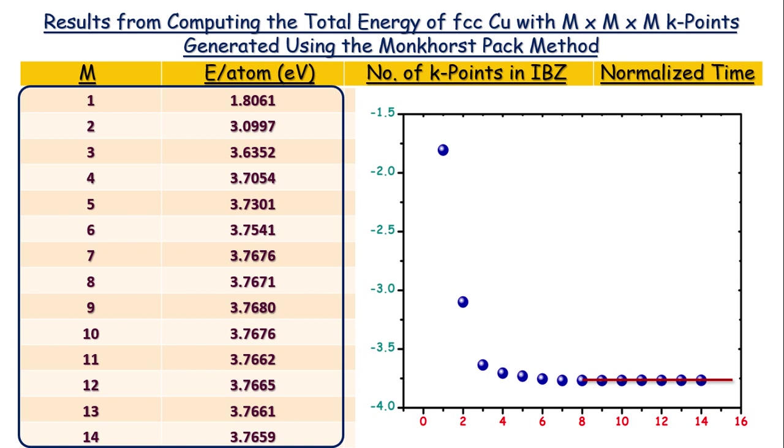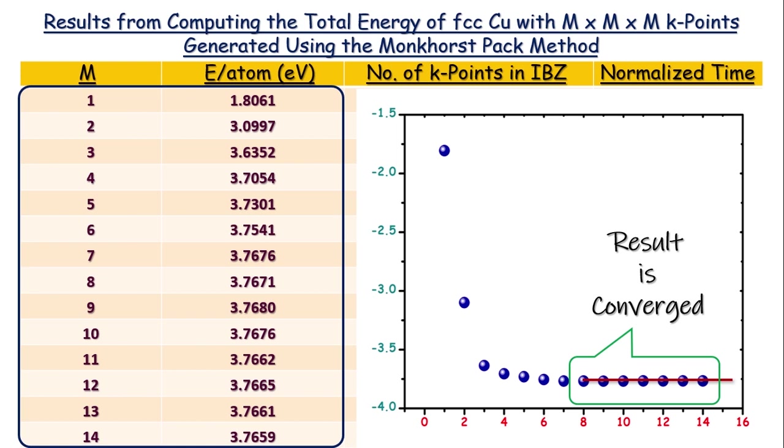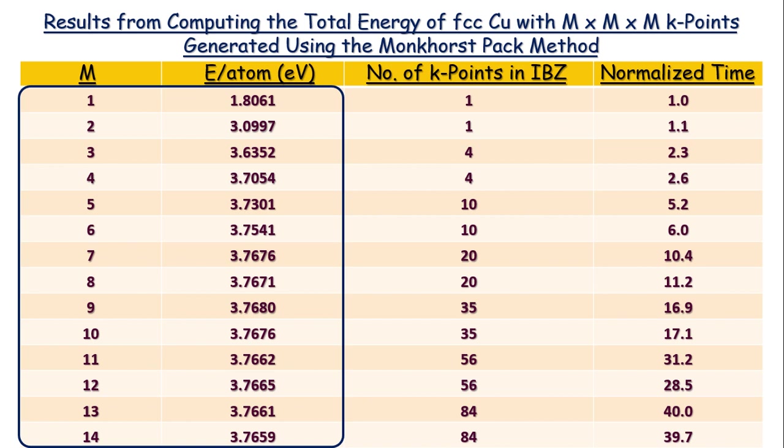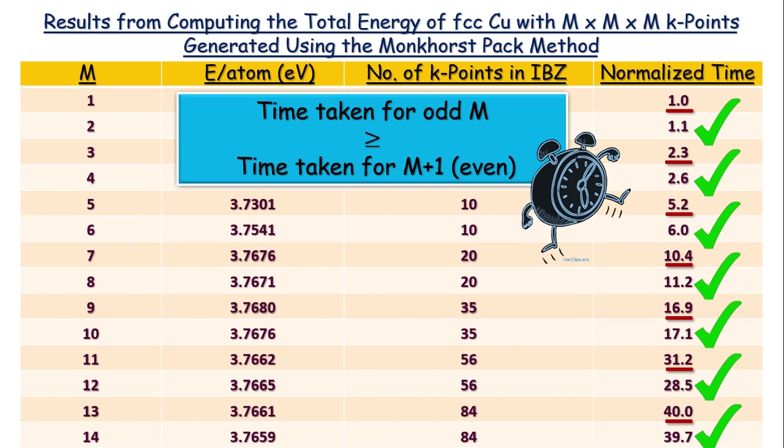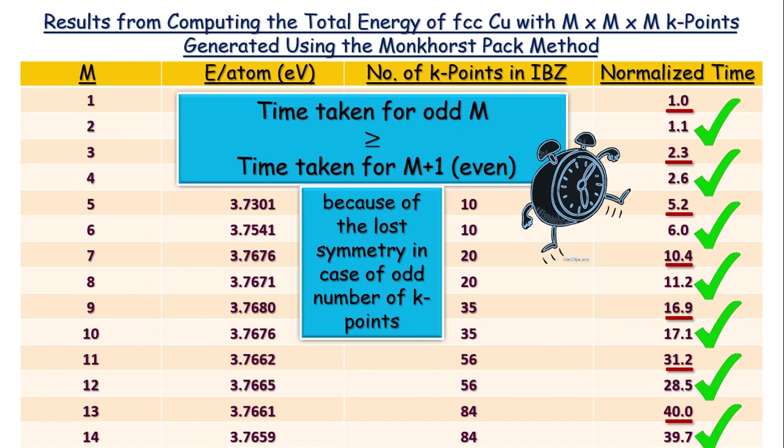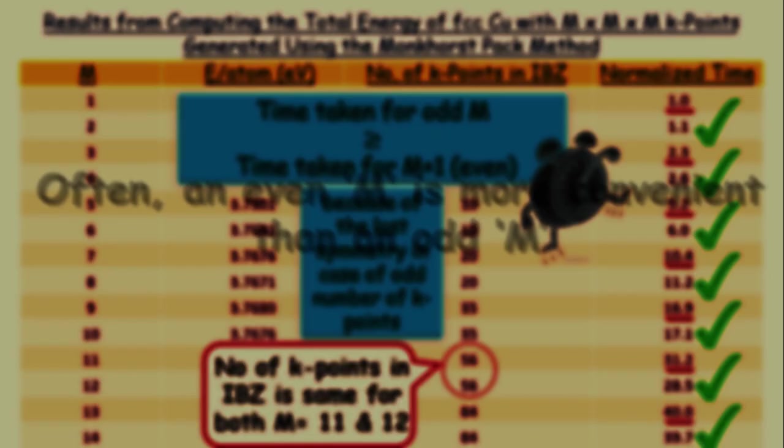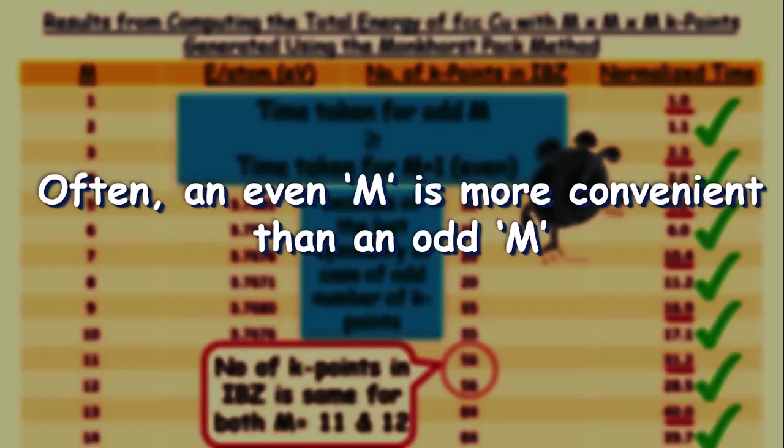Another curious feature of this table is, if M is an odd number, time taken for calculation is often same and sometimes greater too as compared to the time taken for M plus 1 number of K-points. This happens because of the lost symmetry due to the use of odd number of K-points. And as you can see from the list, that the number of K-points in irreducible Brillouin zone is same for M and M plus 1 K-points, where M is an odd number. So, usually, choosing an even number for M is more convenient than choosing an odd number.